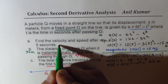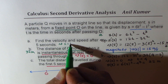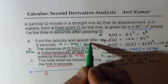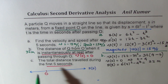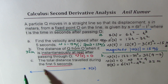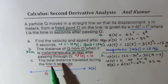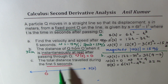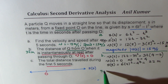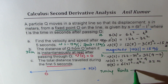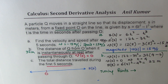To summarize Part A: velocity equals negative 15 meters per second and speed equals 15 meters per second. Now let's look at Part C, which is the total distance traveled during the first five seconds. This part is tricky — when finding total distance traveled, we have to consider turning points and add the distances for each segment of motion.